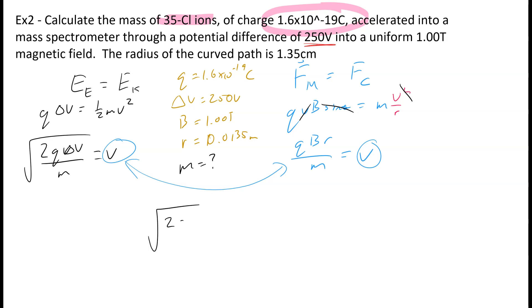So square root of 2Q delta V over m is equal to QBR over m. So we've got 2 M's, we can't work with 2 M's, this is going to get really difficult to read really quickly. So let's just do ourselves a favor, and let's square both sides.